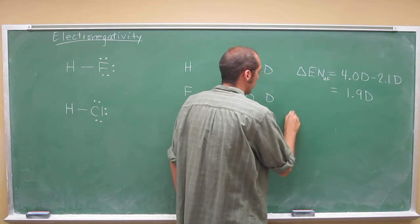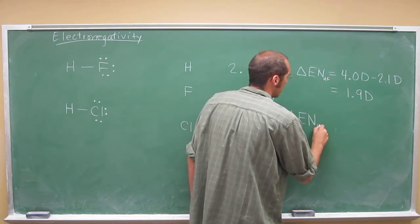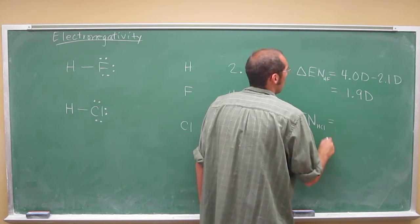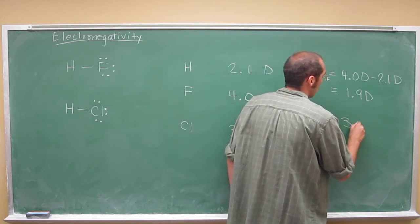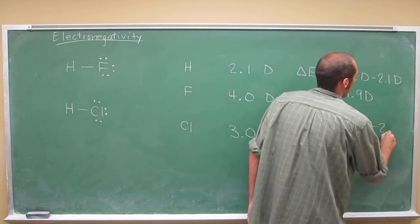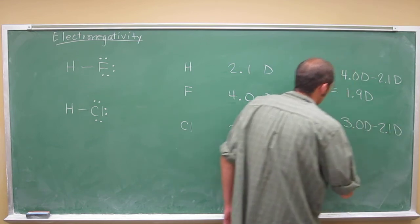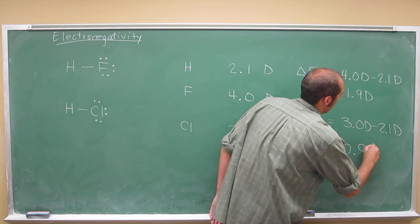And let's do the same thing. What is the change in the electronegativity for the HCl bond? What is the 3.0 Debye minus 2.1 Debye. When we do that, 0.9 Debye.